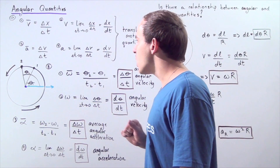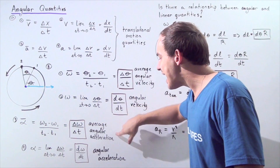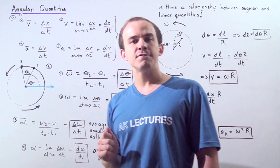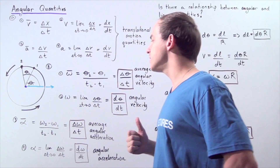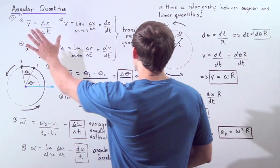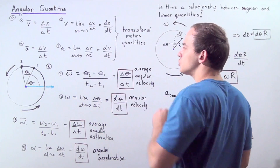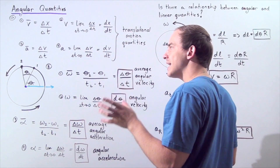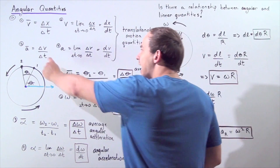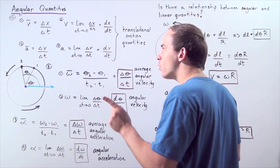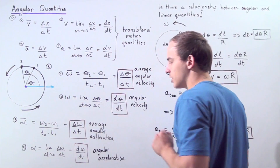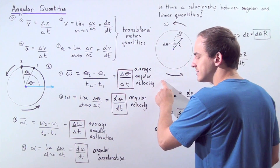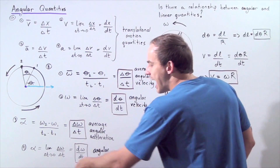We can also talk about average and instantaneous angular acceleration, given by the Greek symbol alpha. The bar simply means we're talking about the average. Looking at translational motion quantities, average linear acceleration is given by the change in velocity divided by change in time. In the same way, we get average angular acceleration by taking our change in angular velocity and dividing by change in time.